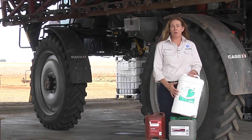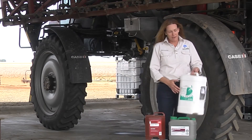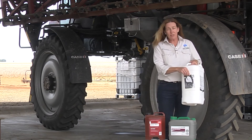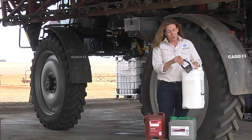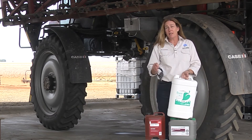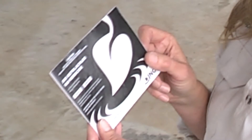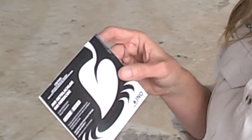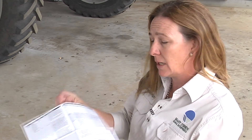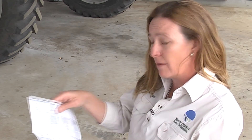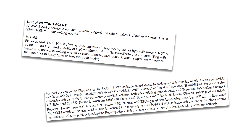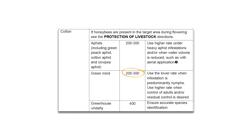In addition to the main label on the side of the drum, many products also have a smaller booklet attached. This also forms part of the legal label that you're required to comply with. These can often be in quite small print, so if you're having any trouble reading it, just ask your reseller for an A4 size copy. When you open this little booklet, you'll see it contains a lot of information, particularly in relation to how to use the product effectively and safely — things like compatibility and mixing requirements, the rates to be used, the situations, the crops, and the pests that are treated.